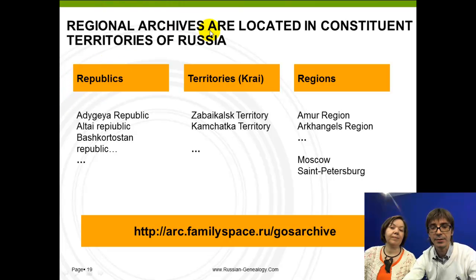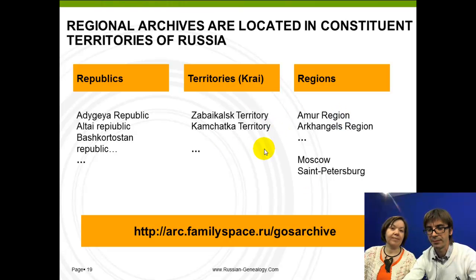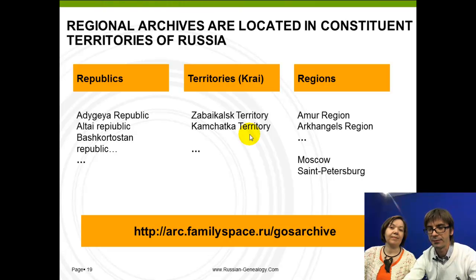The structure of regional archives includes archives of republics, archives of territories (krai in Russian, meaning larger regions), and archives of smaller regions such as Moscow or the Amur region. You can easily find the address of each archive you need. If you speak Russian, you can check the FamilySpace project for a list of archives and addresses. You can call them, send an email, or send an official letter with a request.